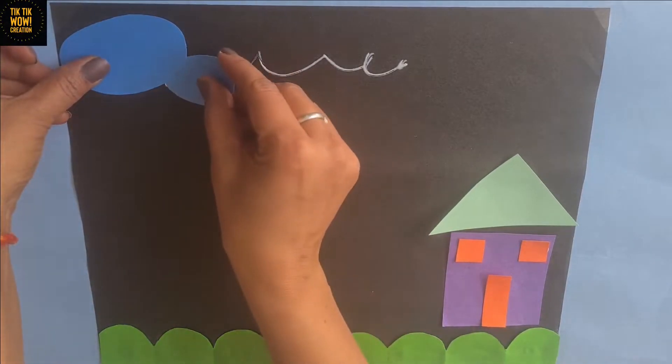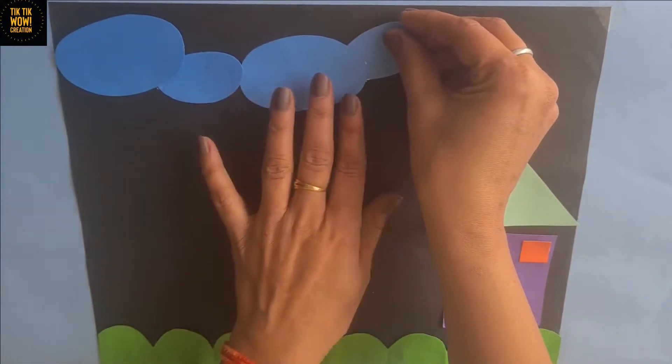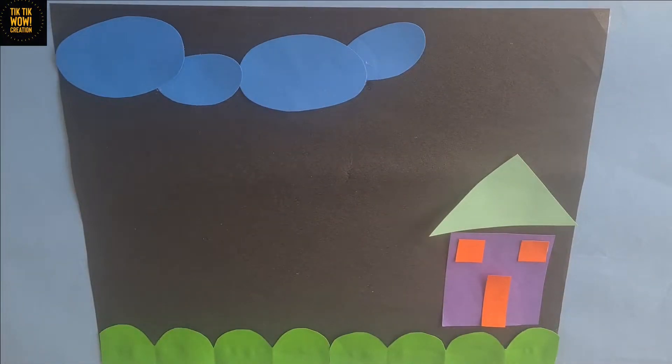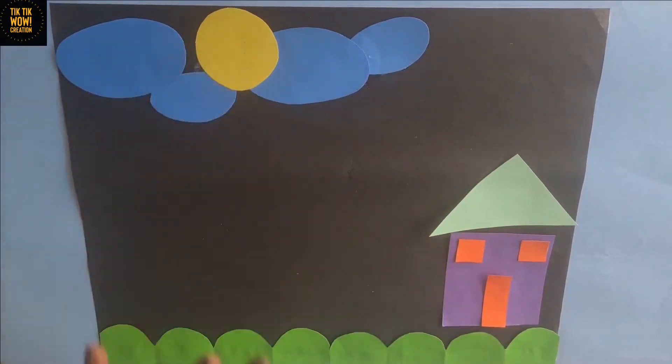Now I am going to paste these oval shaped clouds on the top of the sheet and a bright yellow sun with circle shape.